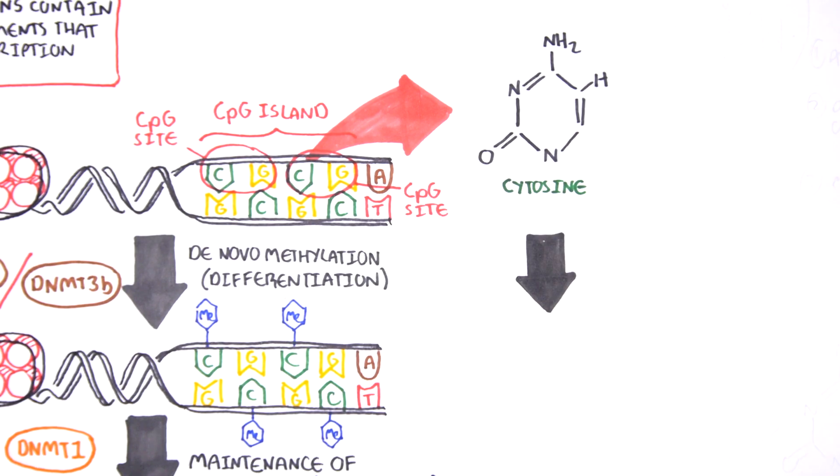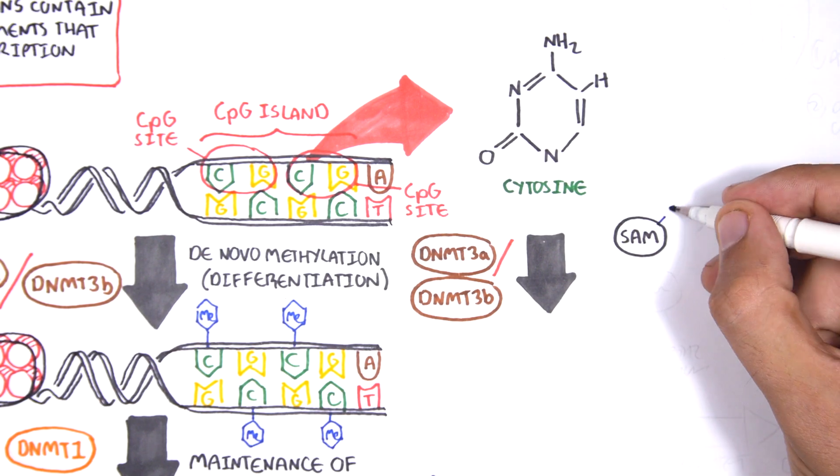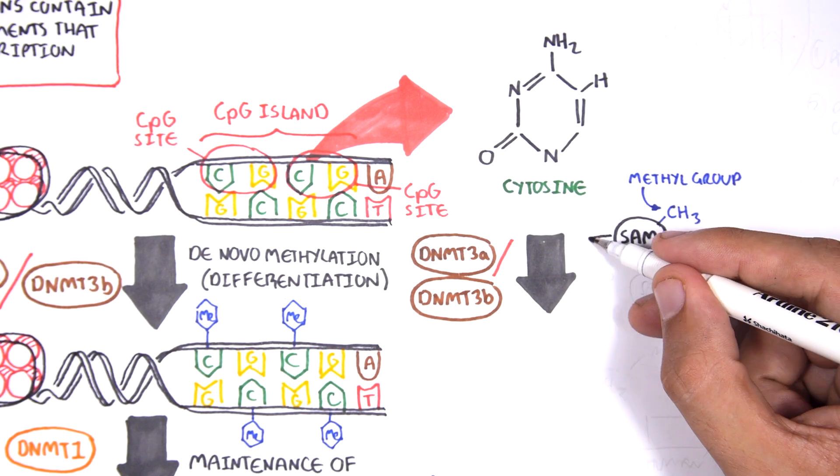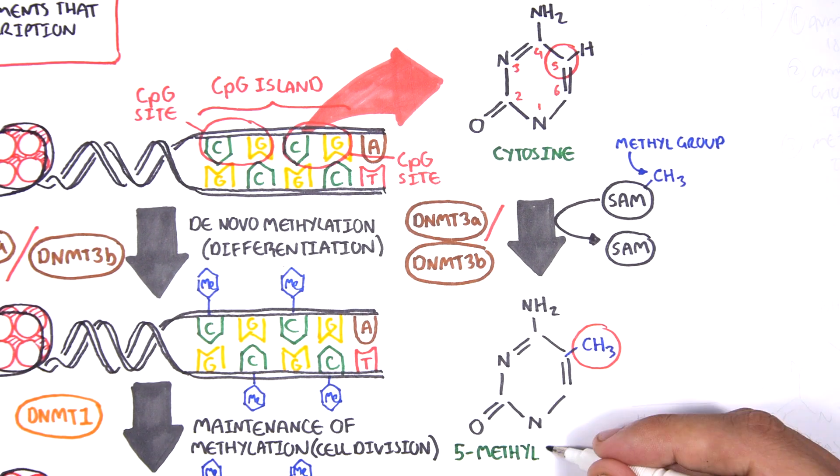DNMT3A and DNMT3B are responsible for DNA methylation in early development. DNMT3B obtains the methyl group from a molecule called SAM. The methyl group is added here, forming 5-methyl cytosine.